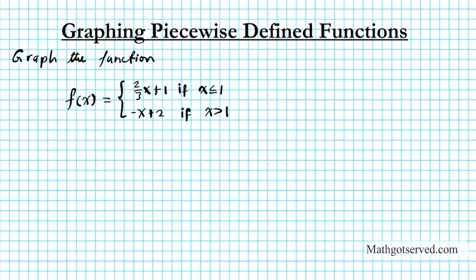The function we're going to be graphing today is f of x equals 2/3 x plus 1 if x is less than or equal to 1, and negative x plus 2 if x is greater than 1. So let's go ahead and graph this function. Before we start, what I like to do is I like to label my function: function 1 and function 2.